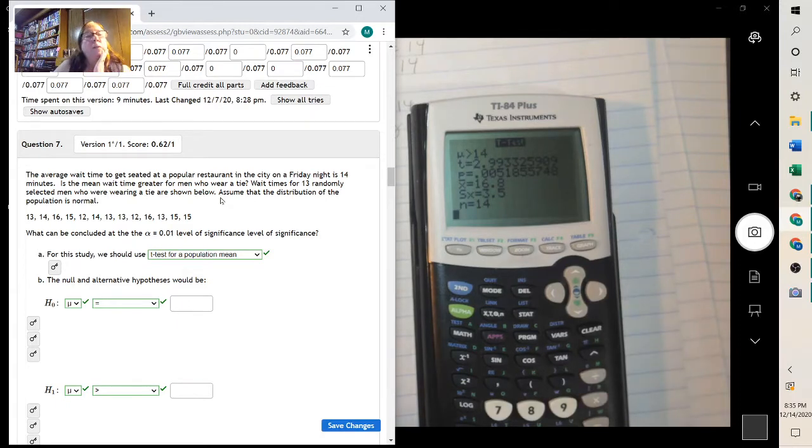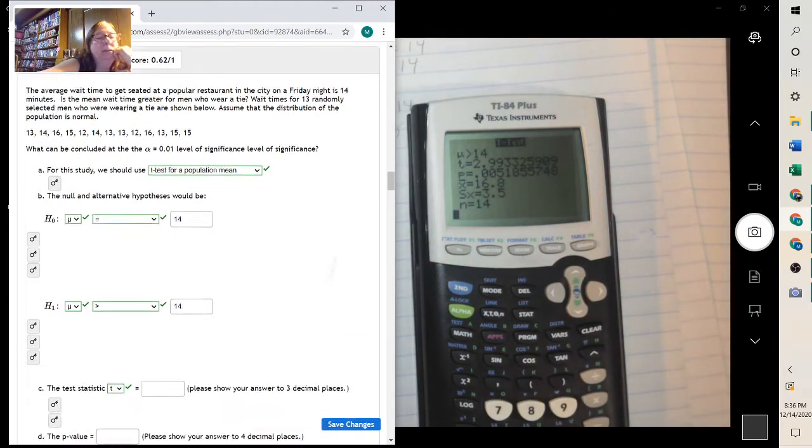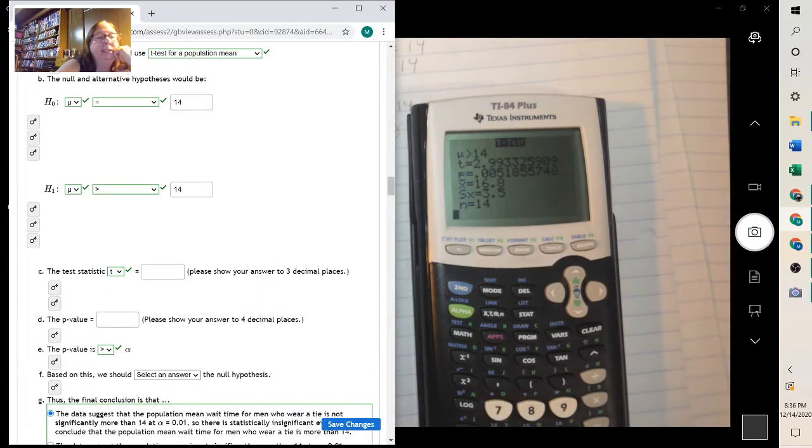And so what we're testing is if they say it's 14 minutes. We want to test if it's higher. So this is equal to, and then this would be your 14 minutes. And this is the same value. So this comes from what somebody said, not from the actual test. Then we do the test down here.